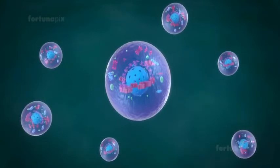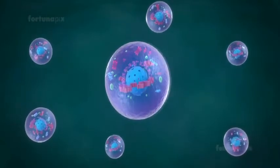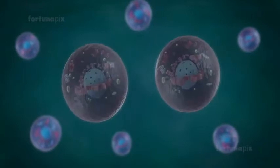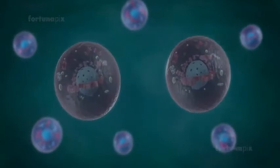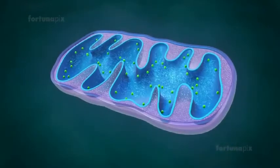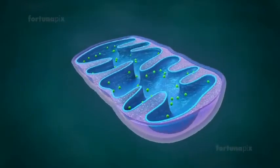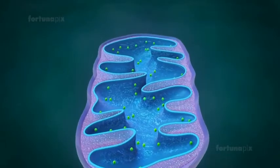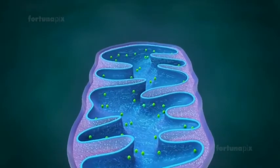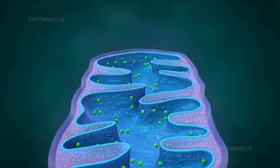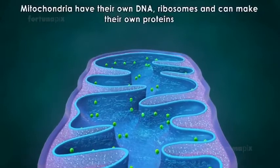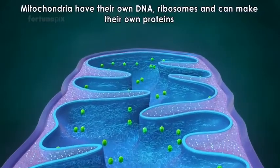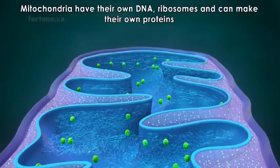Mitochondria are also involved in other cell processes such as cell division and growth, as well as cell death. Mitochondria are semi-autonomous — they are partially dependent on the cell to replicate and grow, but they have their own DNA and ribosomes and can make their own proteins.